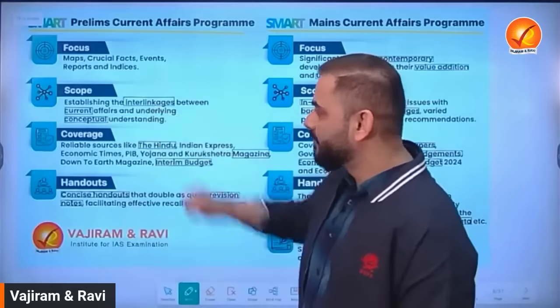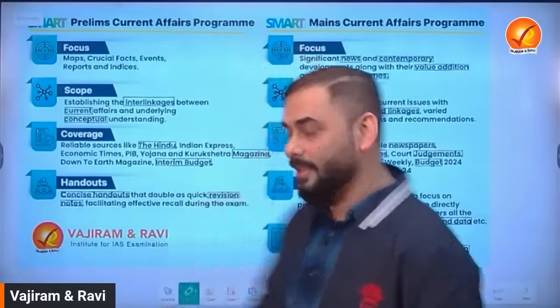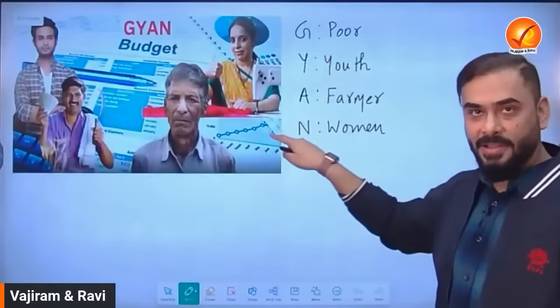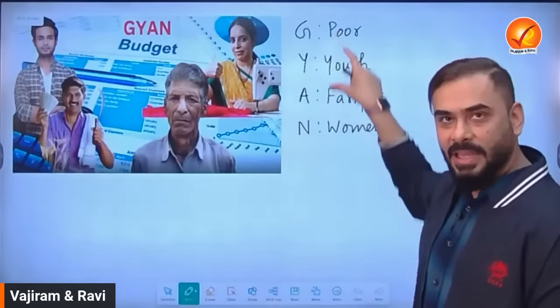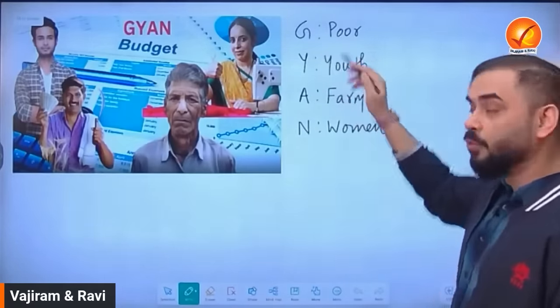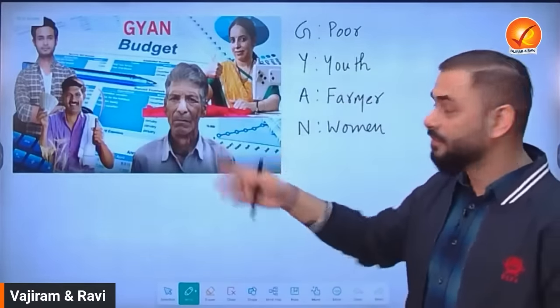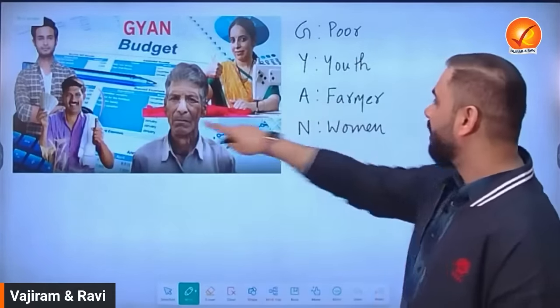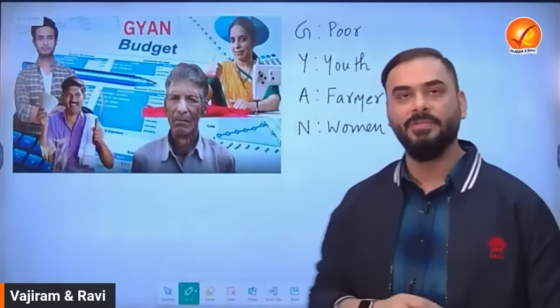Let me use today's interim budget as a reference. The government of India announced that the focus of the interim budget is GYAN. G stands for Garib (poor), Y for Youth, A for Annadatta (farmer), and N for Nari (women). This is the theme of the budget, representing the four pillars the government is focusing on.